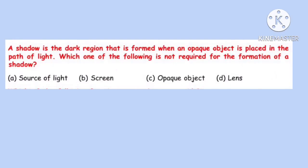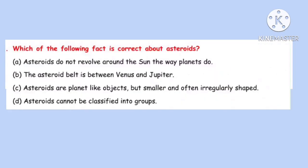Question 23. A shadow is the dark region that is formed when an opaque object is placed in the path of light. Which one of the following is not required for the formation of a shadow? Correct option is D: Lens.